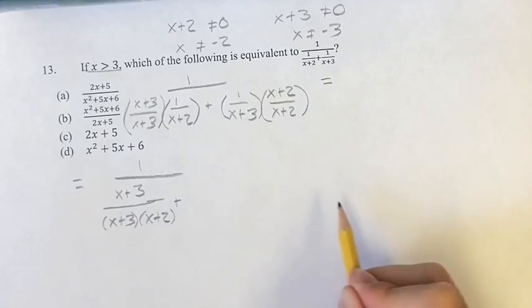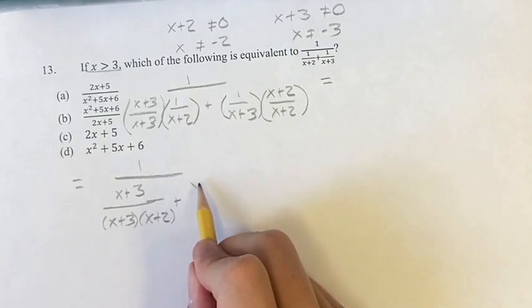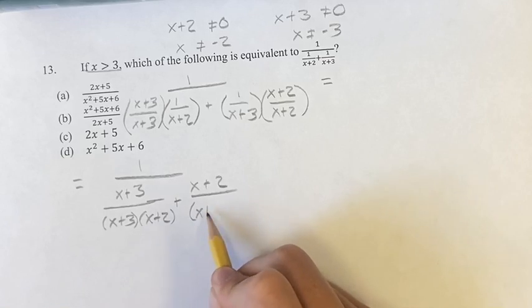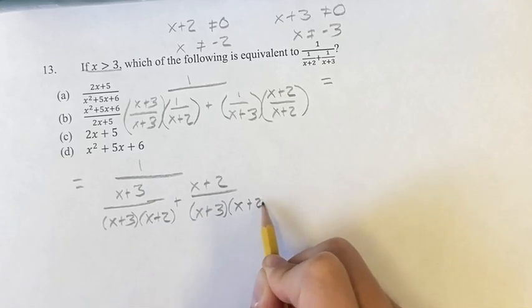And we're adding 1 times x plus 2 is x plus 2 over the same thing, x plus 3 times x plus 2.